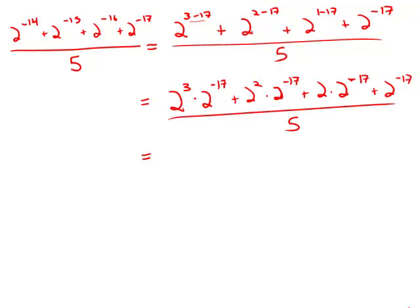In the numerator, every term has a factor of 2 to the negative 17, so we can factor that out. We get 2 to the 3 plus 2 squared plus 2 plus 1, times 2 to the negative 17, all over 5.